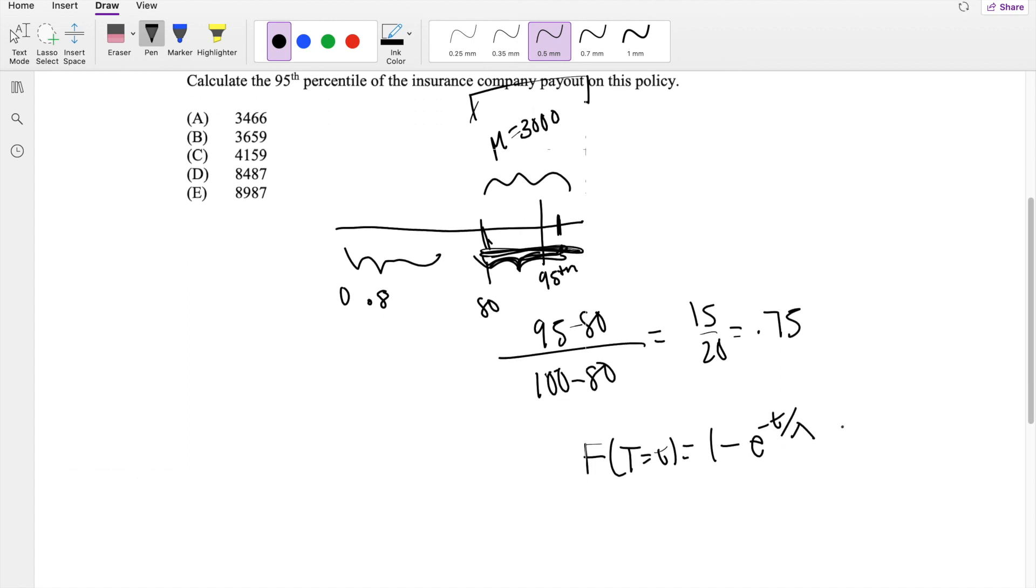And we're trying to find the 75th percentile, so it's setting it equal to 0.75. And this is 1 minus e to the negative t, where t is what we're looking for, divided by lambda, which is 3,000, is equal to 0.75.